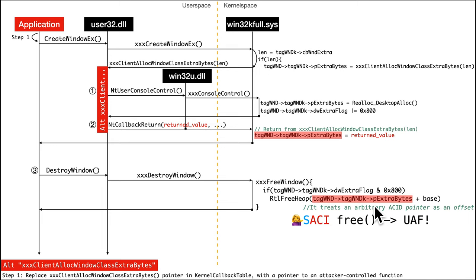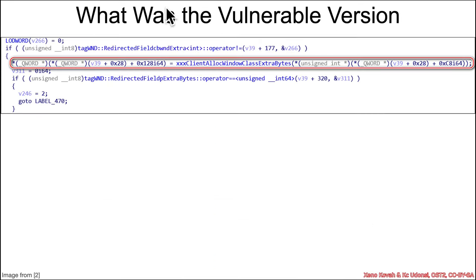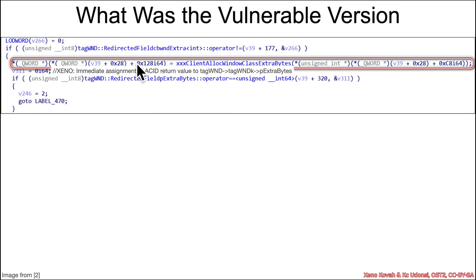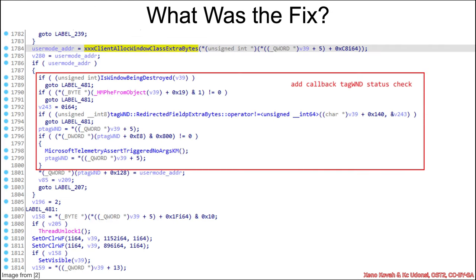We know we can free anything on that particular heap. That still seems like it could lead to a use-after-free — something just disappears out from underneath something else and can be reallocated with attacker-controlled values. This is not actually how it got exploited; they didn't use a use-after-free. But this shows what's true — it could lead to one. The vulnerable pseudocode basically had xxxClientAllocWindowsClassExtraBytes being immediately assigned to pExtraBytes. That immediate assignment was the problem.